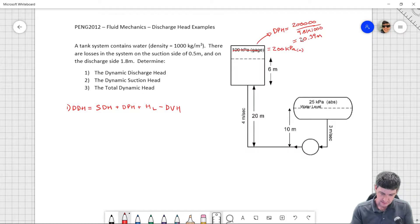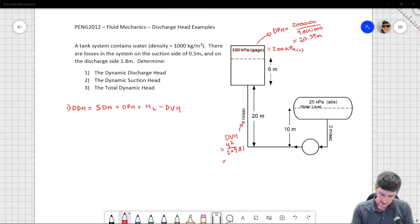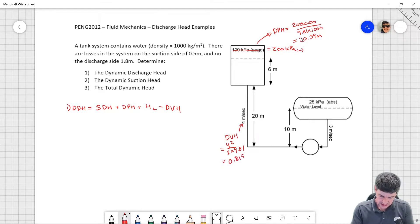I also have my dynamic velocity head. So my dynamic velocity head due to velocity leaving the pump, and it's going to be equal to 4 squared over 2 times gravity. And that ends up being 0.815 meters. My static discharge head is going to be the distance all the way from my pump center line up to the surface. And that's going to be my static discharge head is going to be equal to 26 meters.